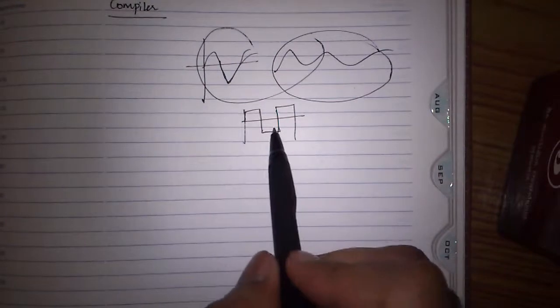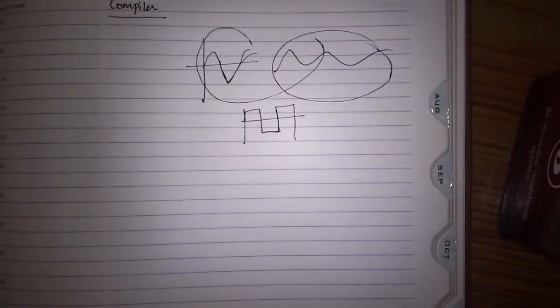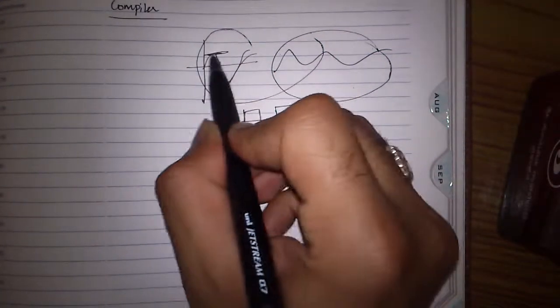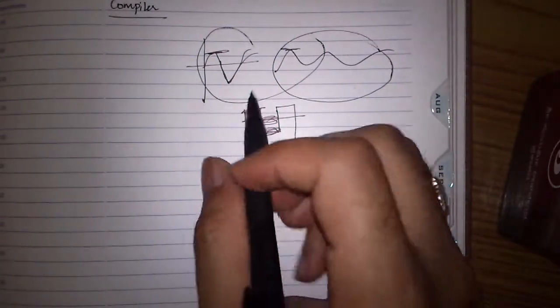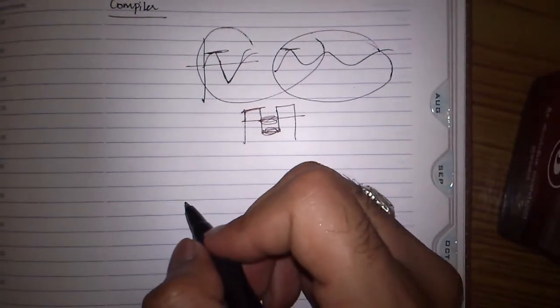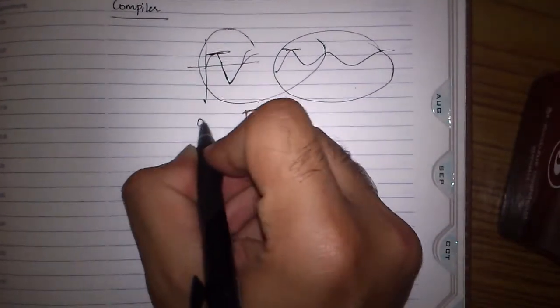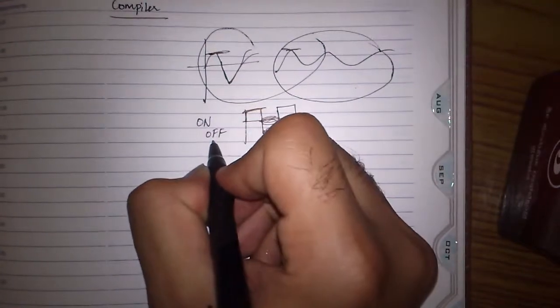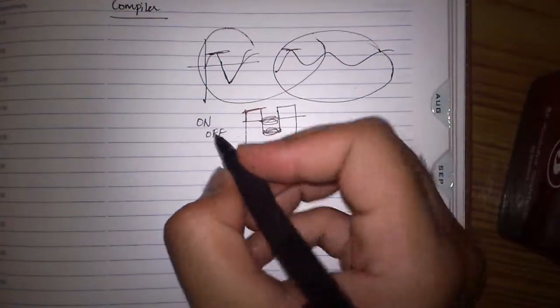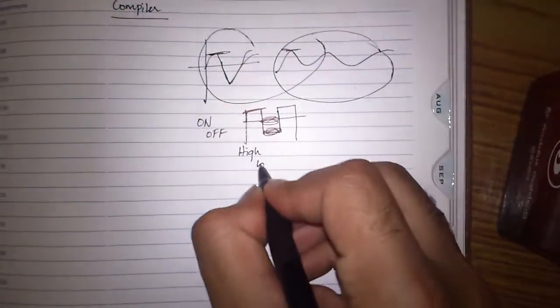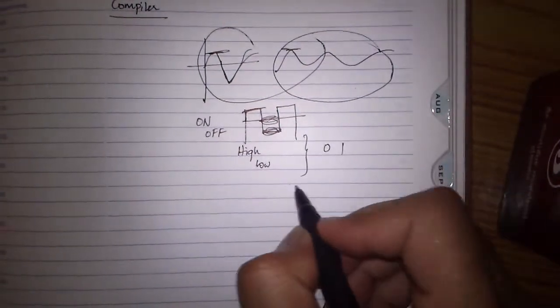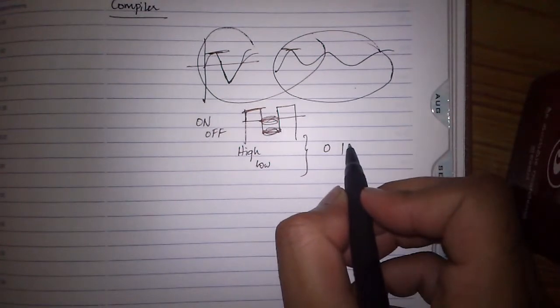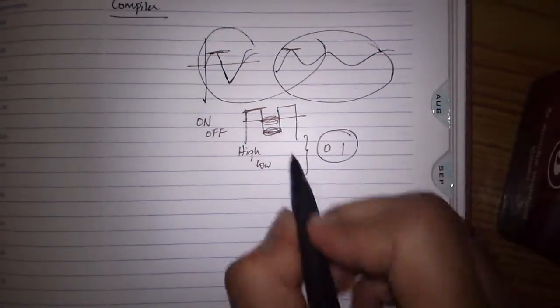Computer can see these signals. Basically, computer can understand only two states: a high state, this, and a low state, this. Computer can understand two things: whether something is on or off, whether you have a high signal or low signal, or in other terms we can call it whether it is zero or one.